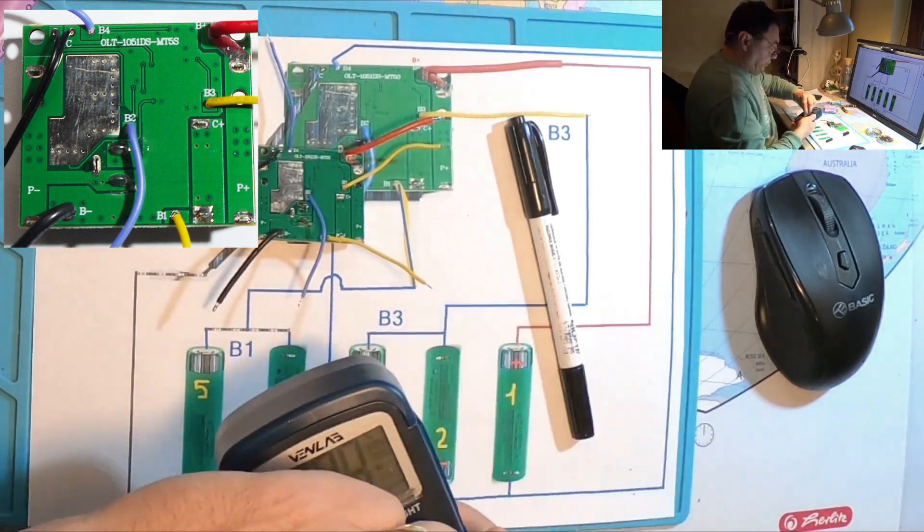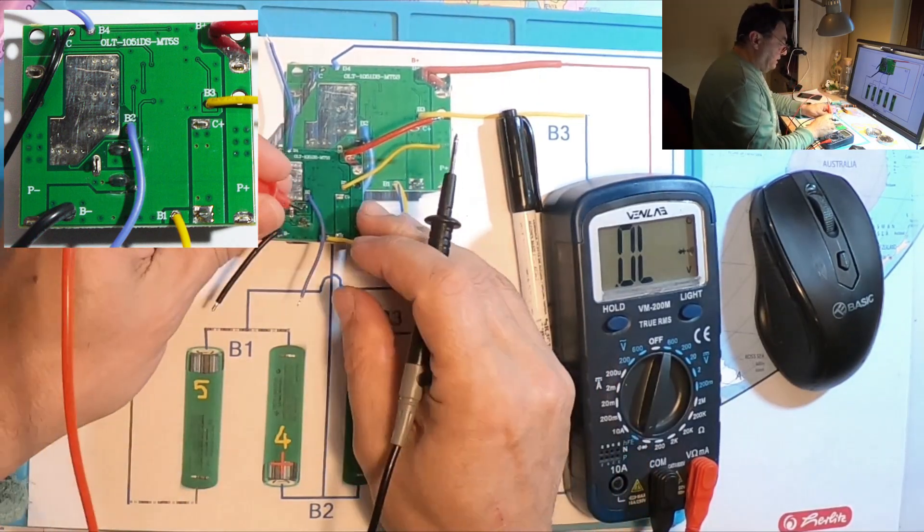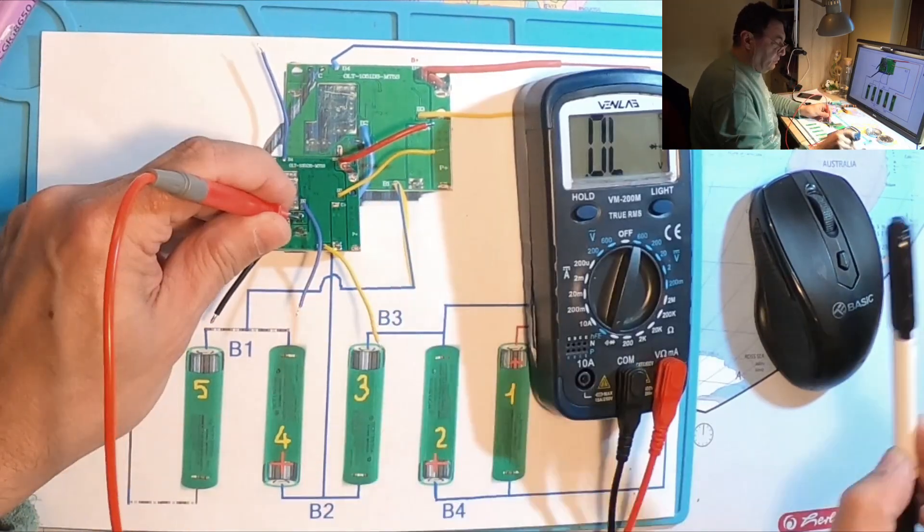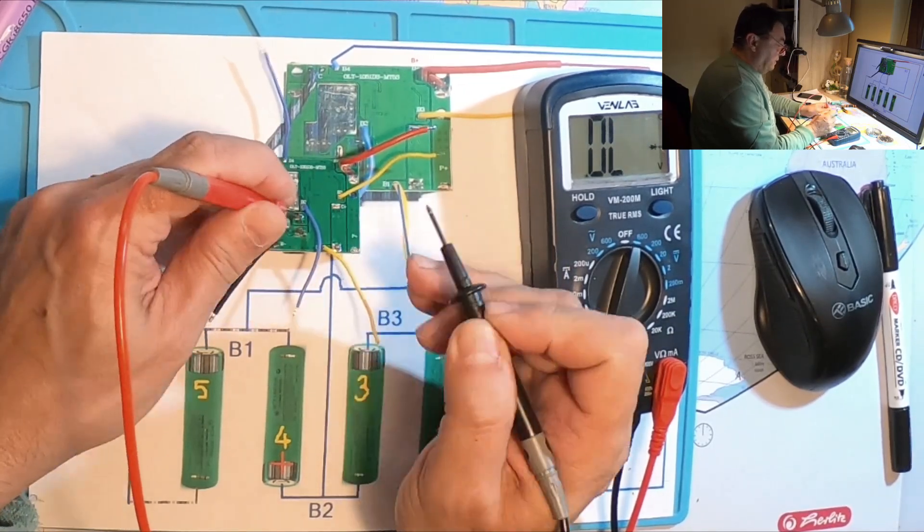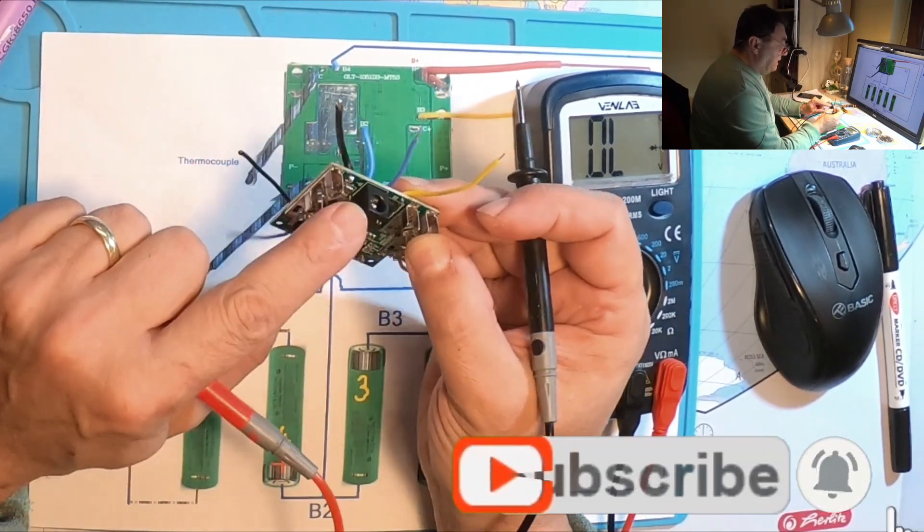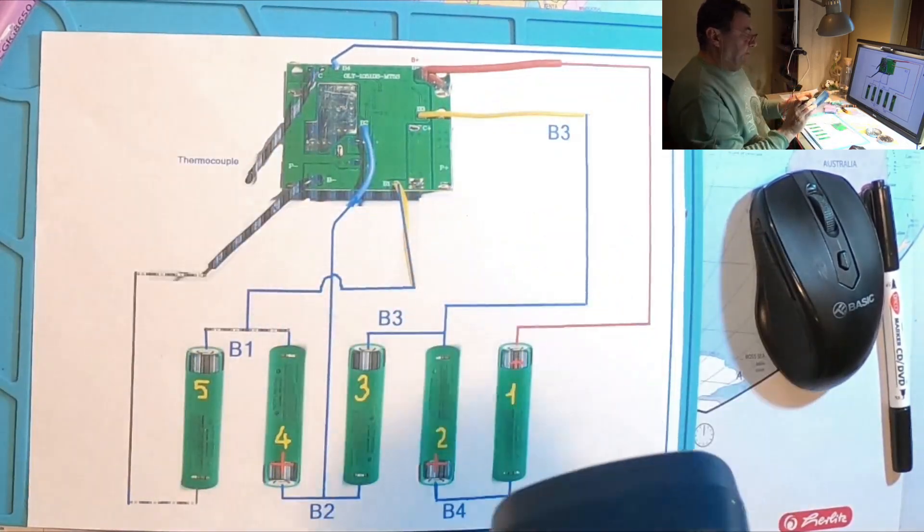The middle pin should go to the charging plus or something. Yeah, we have the multimeter continuity. This is nice because I can use this as well for supplying the power. Let's put the things together.